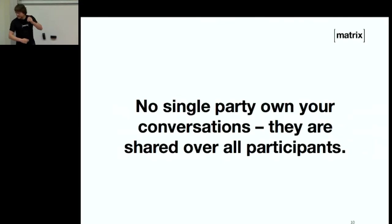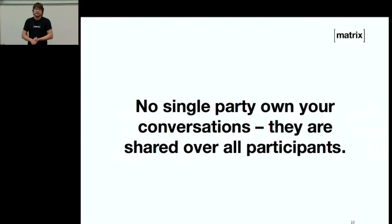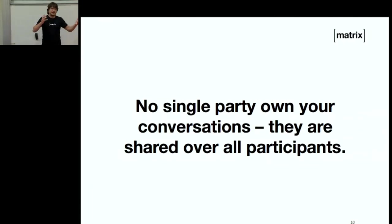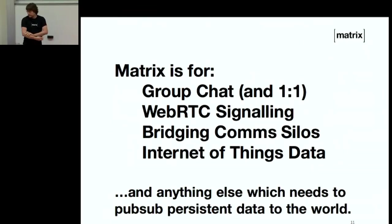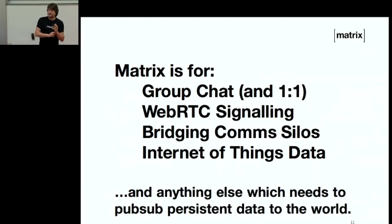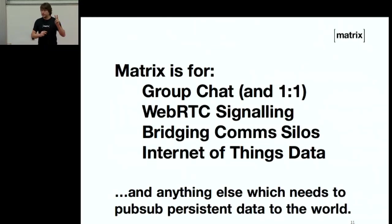The whole point of this is that no single party should ever own your communication. You should never have your information trapped inside WhatsApp. The whole idea is that each participant equally has control and ownership of that information, just like Git. So what can you use it for? Obviously, group chat is a huge use case, and group chat is the primitive that we provide. We do not provide one-to-one chat, because a one-to-one chat is group chat with two people.